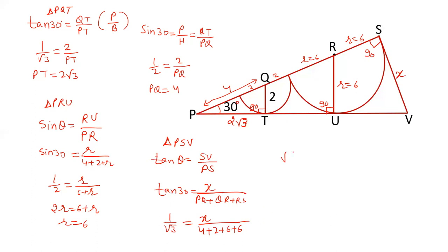So root 3 x cross multiply. Root 3 x equals to 4 plus 6 plus 6 plus 2 is 18. The value of x will be equal to 18 upon root 3. We can rationalize this. Multiply and divide by root 3. So it becomes 18 root 3 by 3. And so now this value of x will be 6 root 3.